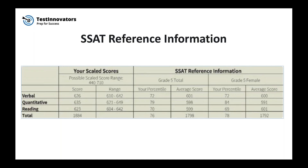Now let's look at the SSAT reference information, which tells you the percentile and average score for your grade and gender. The SSAT percentile, which is from 1 to 99, compares your performance on the SSAT with other students of the same grade and gender who've taken the SSAT in the US and Canada on a standard test date in the previous three years — that's your norm group. For students who have taken the SSAT more than once, only their first set of scores is included in this norming process. You can see the average score for the norm group for each section — verbal, quantitative, and reading — as well as your percentile compared to the norm group.